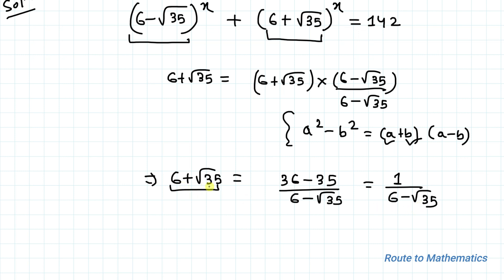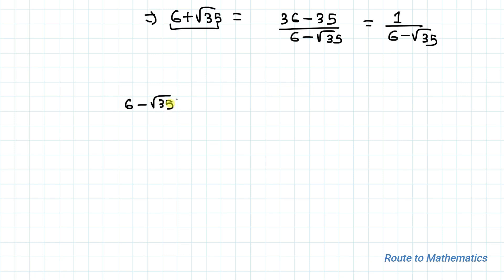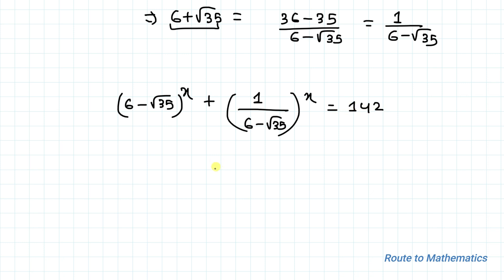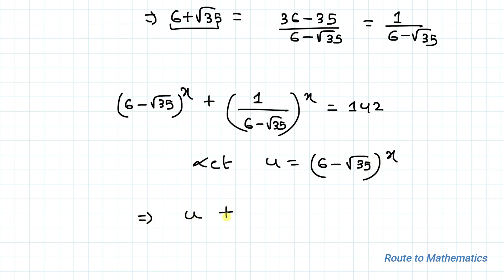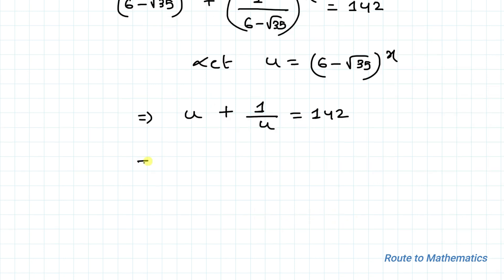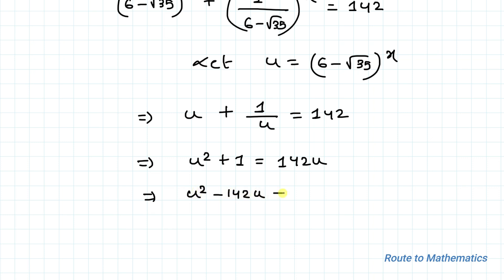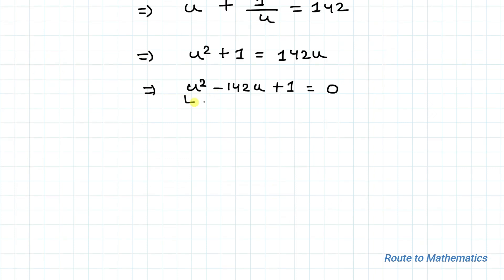Substituting, we have (6 minus √35) to the power x plus 1 divided by (6 minus √35) to the power x equals to 142. Now let's take u equals to (6 minus √35) to the power x. Substituting, the equation becomes u plus 1/u equals to 142. Taking LCM, we have u² plus 1 equals to 142u, and rearranging: u² minus 142u plus 1 equals to 0. So here we have a quadratic equation.